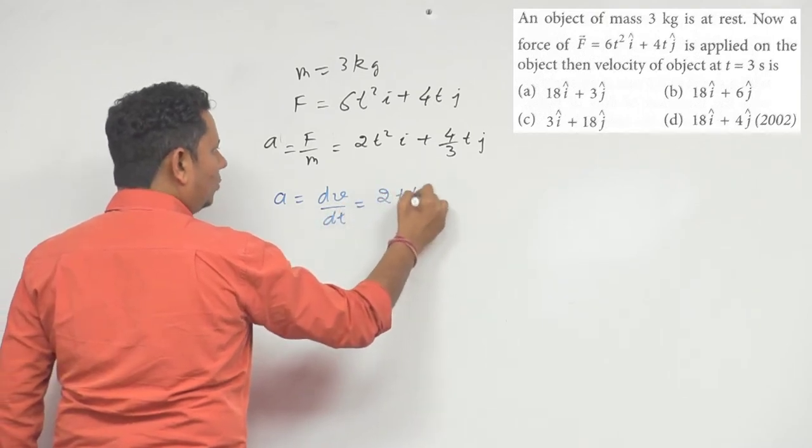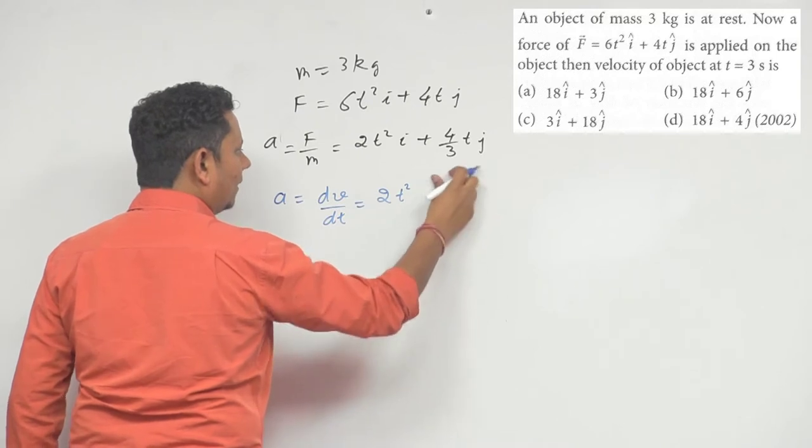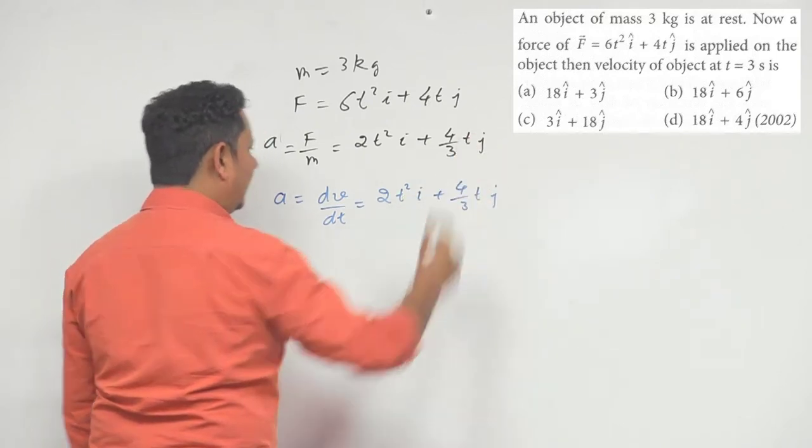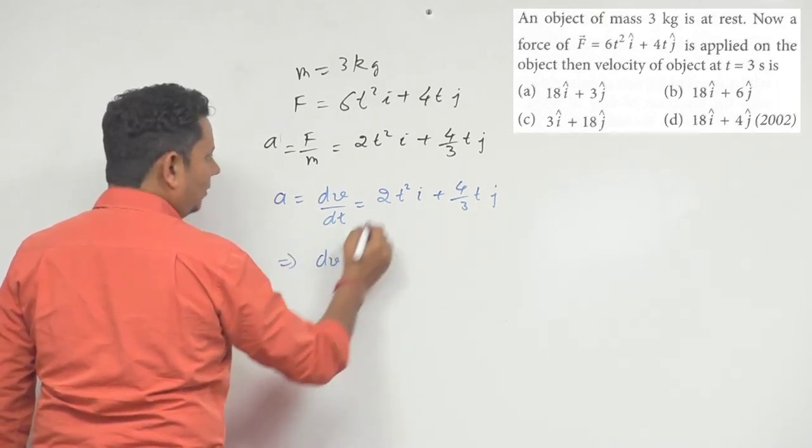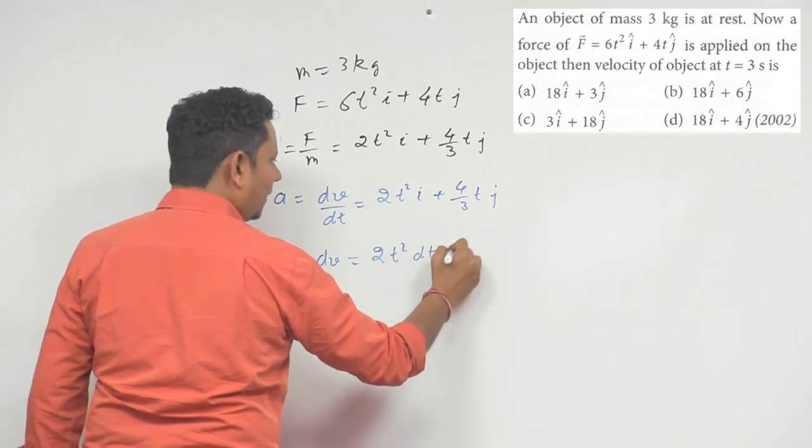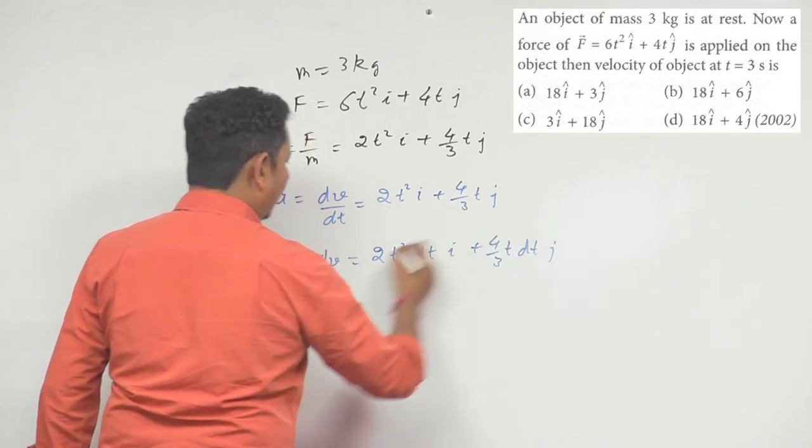This will be 2t²i cap plus 4/3 tj cap. If we use this relation, we can say dv will be equal to a dt, which is 2t²i cap plus 4/3 tj cap times dt.